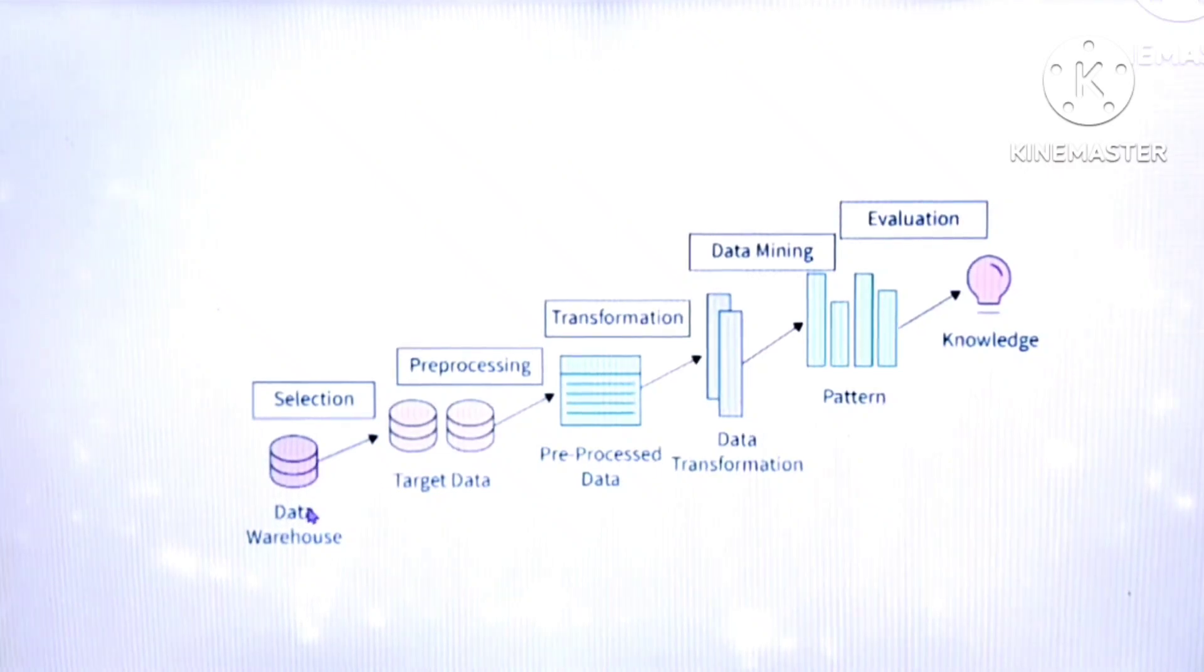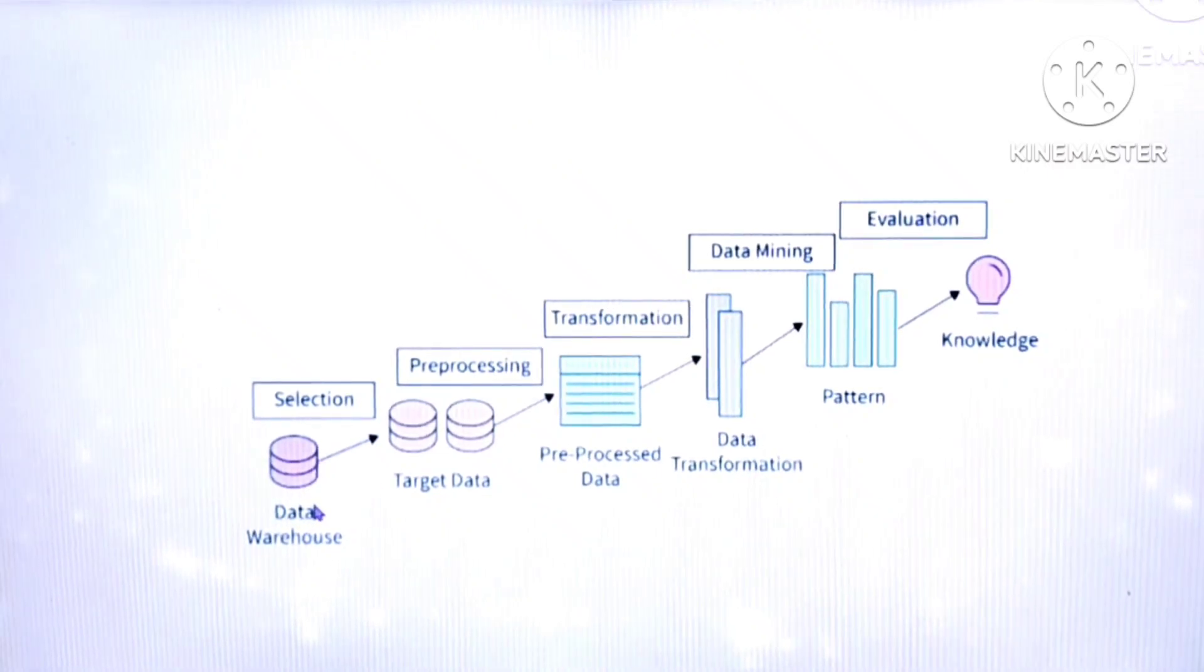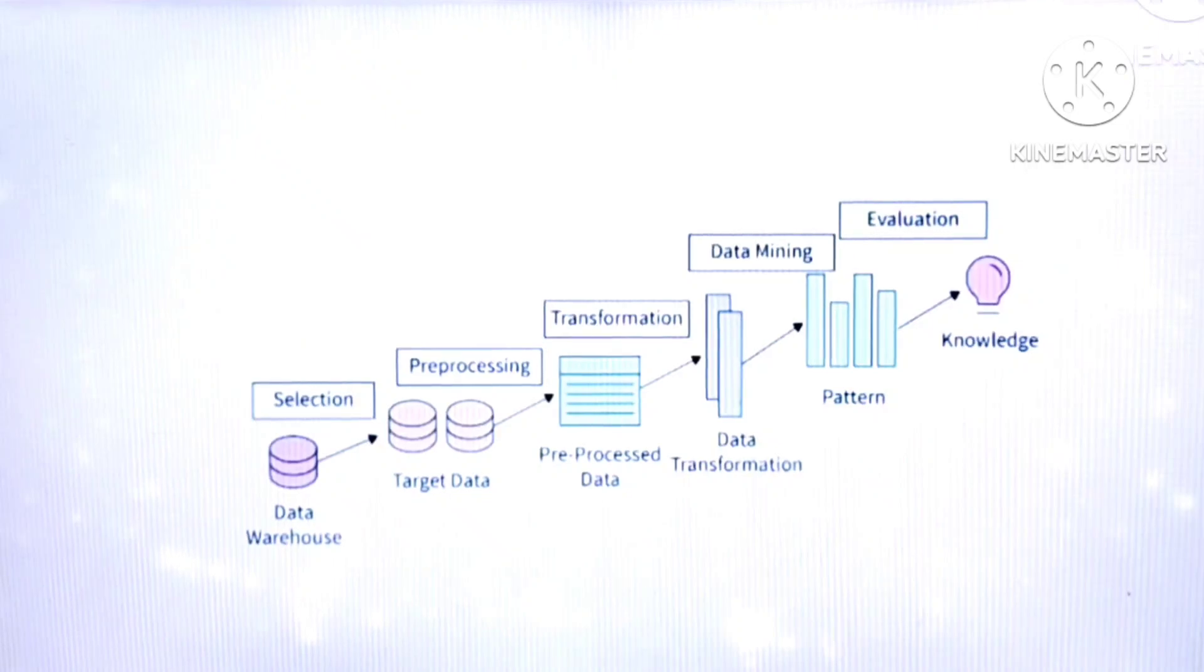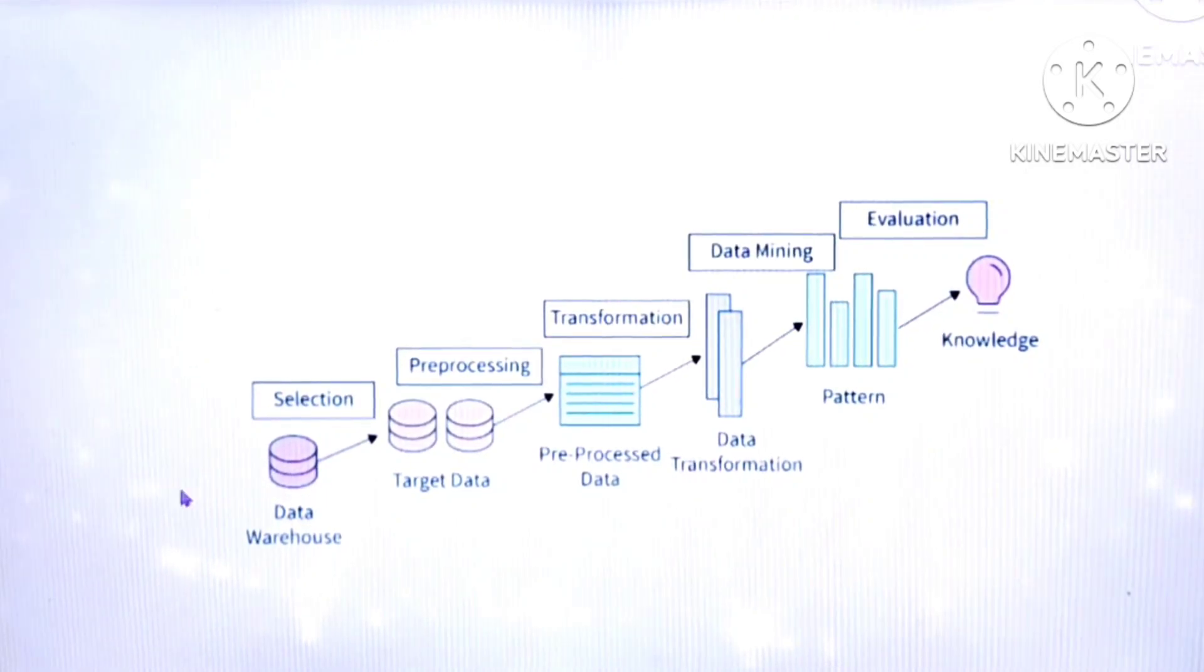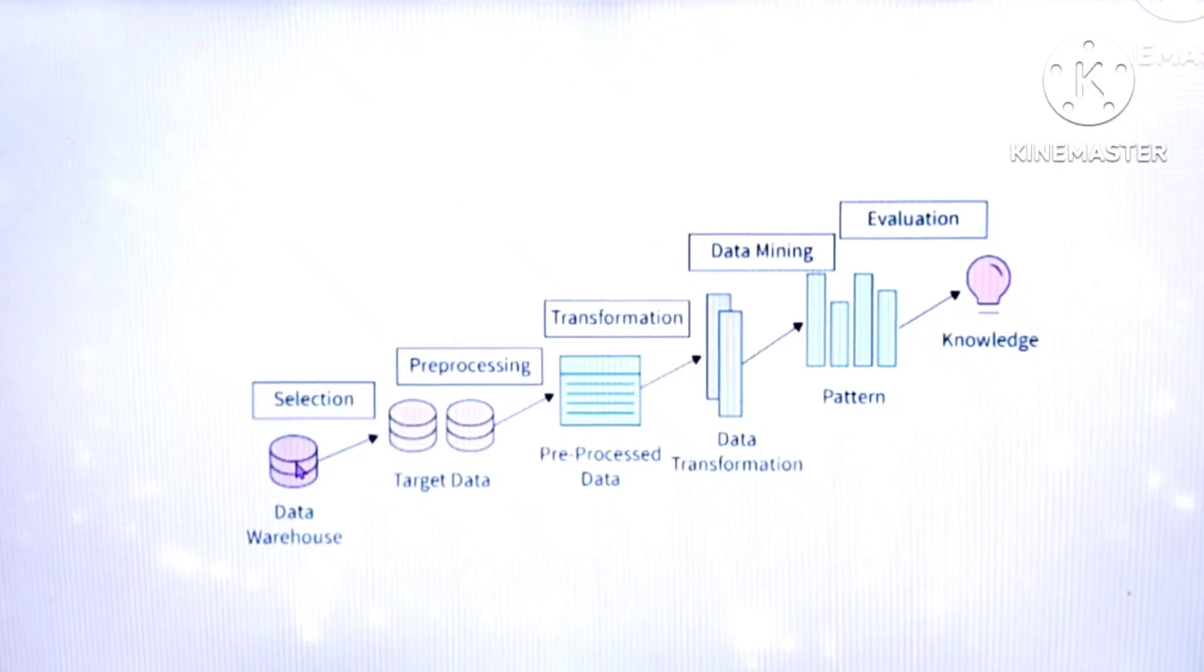This is data warehouse. Warehouse means all data stores in one place. It means wanted data, unwanted data, all. All will be stored in data warehouse. You have to find out only useful data by using KDD process. Data warehouse topic I will explain in detail in next video. So this is data warehouse. In the step, it will select the data. Targeted data. It means only selected data. First one is data selection, right? So data warehouse, first step, it will select the data as targeted data.